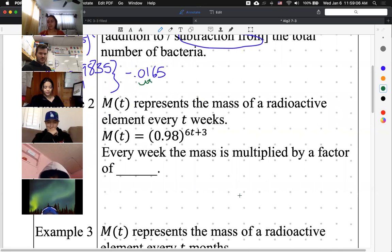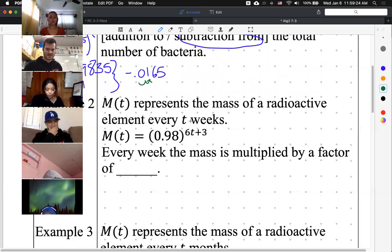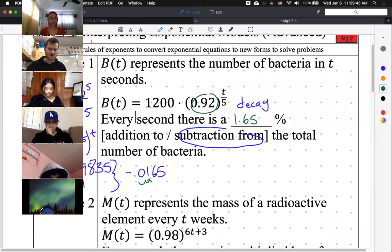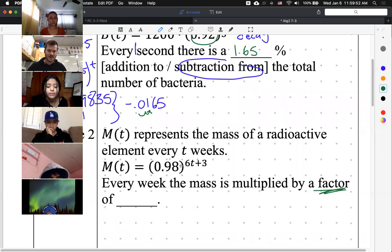Example number two, capital M(t), that's going to represent the mass of a radioactive element every t weeks. And it's 0.98 to the power of 6t plus 3. Okay. What form do we need this in? Every week, the mass is multiplied by a factor of what? So a little bit different. One thing that's different is obviously it's not a variable divided by anything. Now I have some multiplication and addition, but it is a little bit easier because I don't have to convert it to a percent. It's actually asking what is the factor?